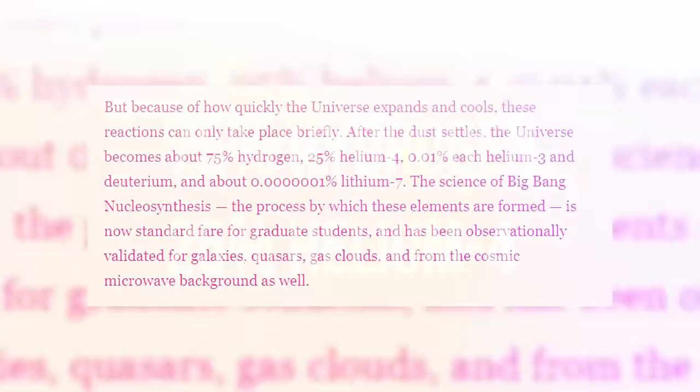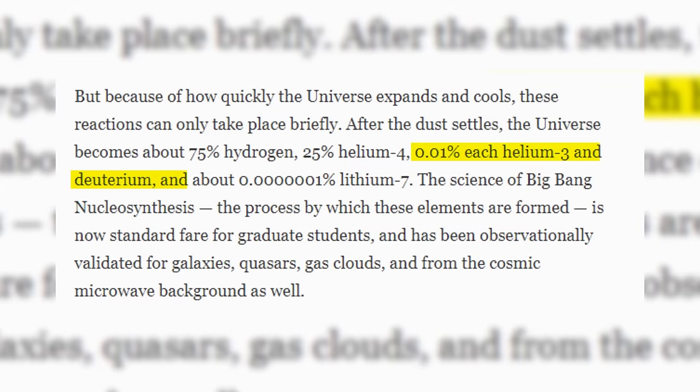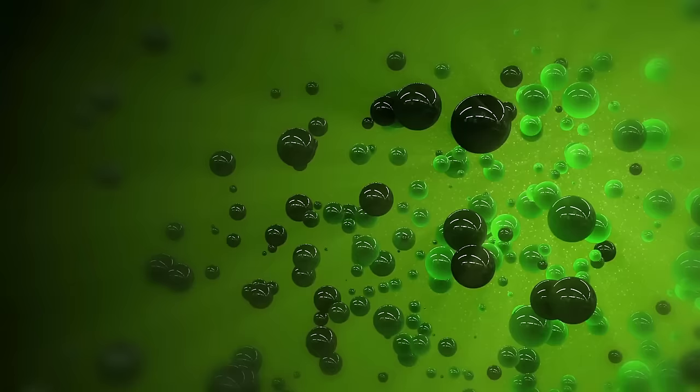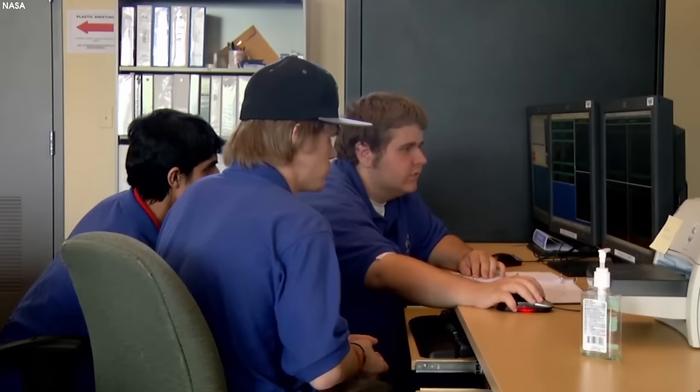After the dust settles, the universe becomes about 75% hydrogen, 25% helium-4, 0.01% each helium-3 and deuterium, and about 0.00001% lithium-7. This is the science of Big Bang nucleosynthesis.